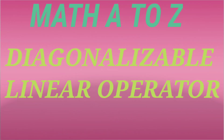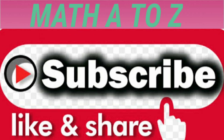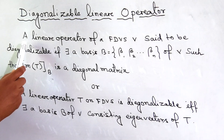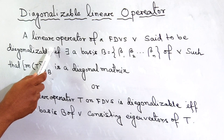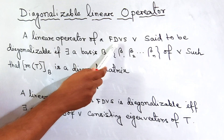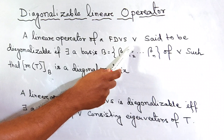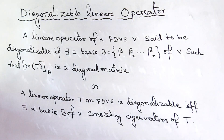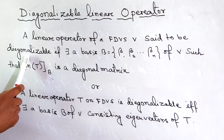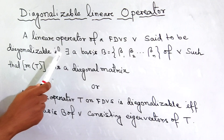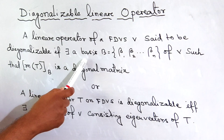When we say a linear operator is diagonalizable or it is not diagonalizable — a linear operator of a finite dimensional vector space V is said to be diagonalizable if there exists a basis of V.